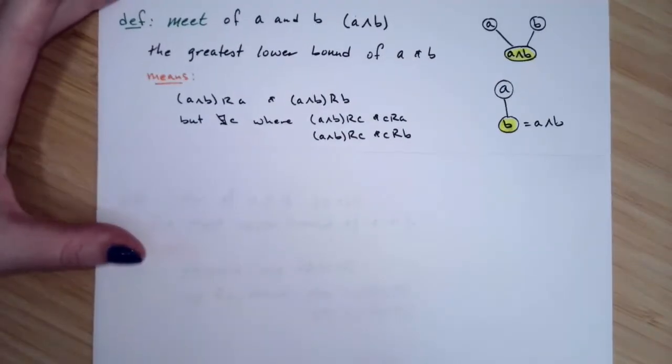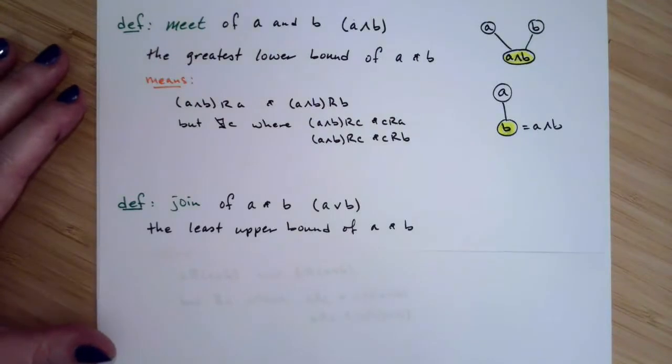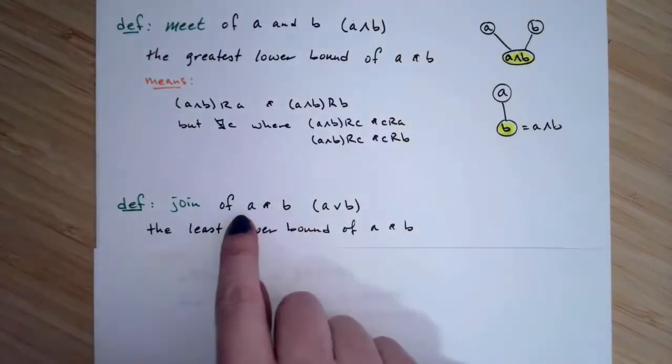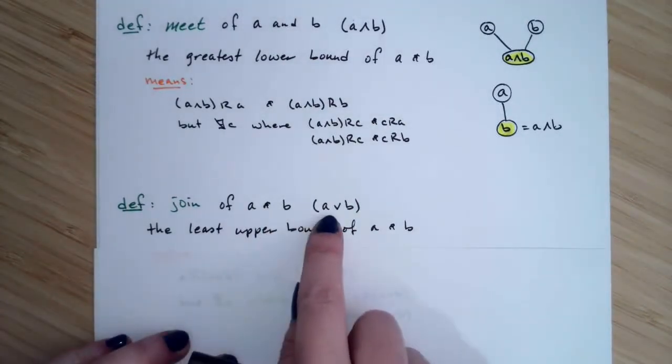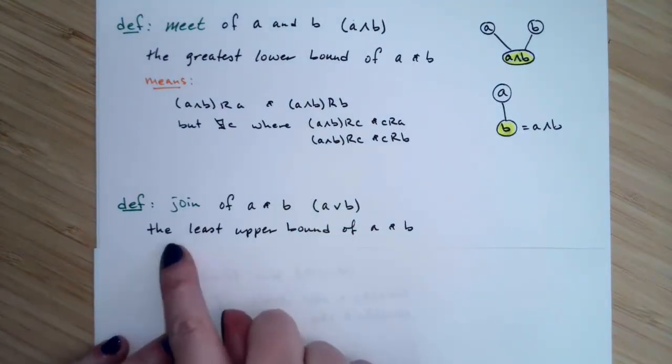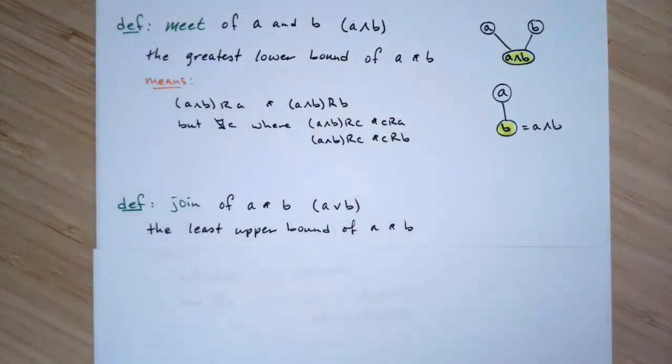And it turns out a join is defined very, very similarly. So the official definition of a join is a join of two elements, A and B, that are not the same element. Symbolically, it looks almost the same, except now this is a little V. It points down.